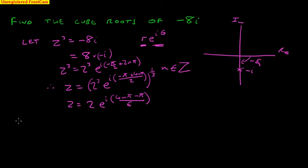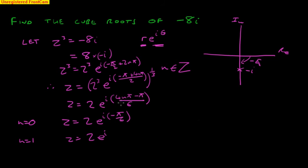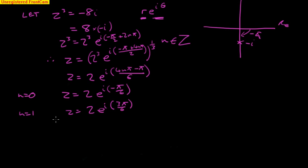Here we go. Let's start off and find them. If we put n equal to 0, we get z equals 2·e^(i·(−π/6)). If n equals 1, we get 2·e^(i·(4π − π)/6) = 2·e^(i·3π/6). And for n equals −1, we get minus 4π minus 1π, which is −5π/6. So z equals 2·e^(i·(−5π/6)).